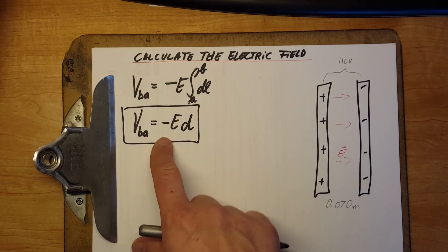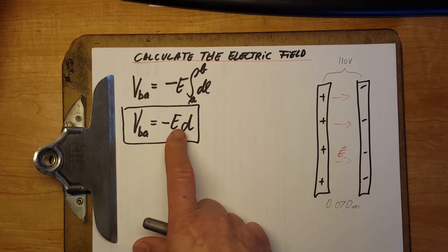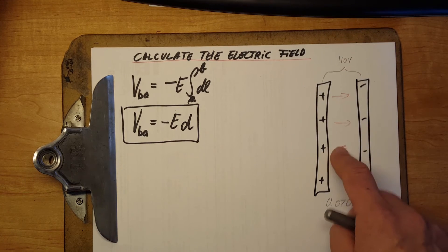You can always use this formula, the simple version, if you know for sure that the E field is uniform.